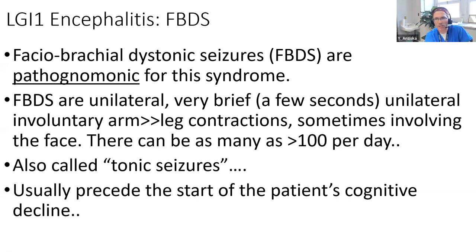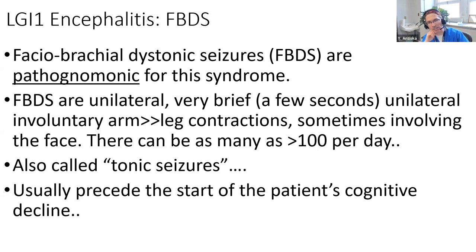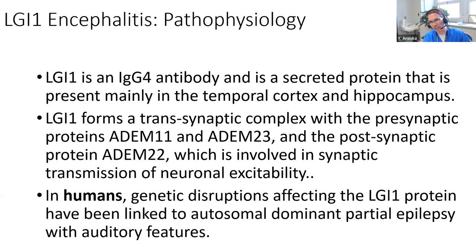I had a patient where we counted about 20 to 30 movements in 30 minutes - almost every minute. They're usually very brief, usually unilateral, and always involve the arm and lower face, rarely the leg. After these movements start, usually within a few months cognitive decline begins. They're frequently seen in older people so it gets dismissed as normal aging. This is actually an IgG4 antibody, similar to MuSK myasthenia gravis - it's a secreted protein found in the temporal cortex and hippocampus.